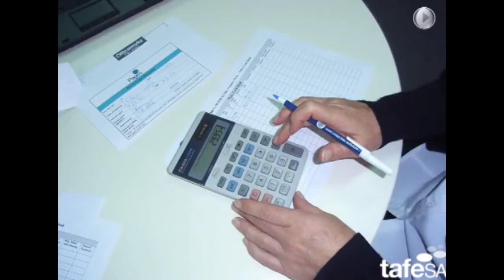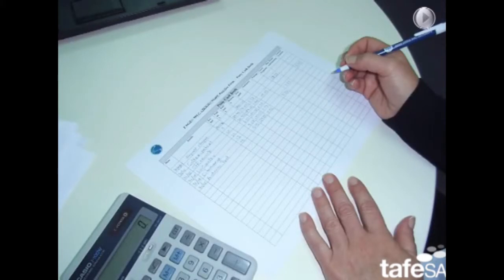Here you can see the petty cashier using the calculator to subtract the amount on the voucher from the amount in the balance column. This keeps a running balance. The details from each voucher are entered into the petty cash book. As you can see here,